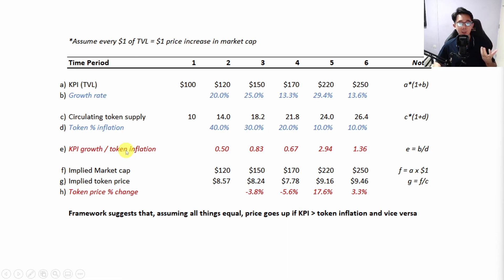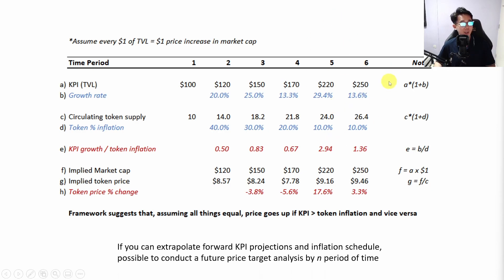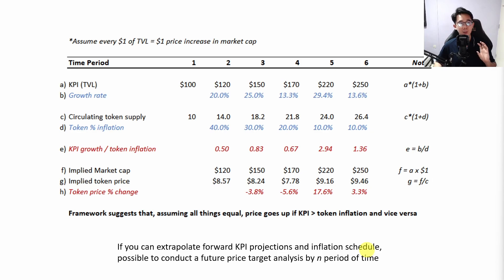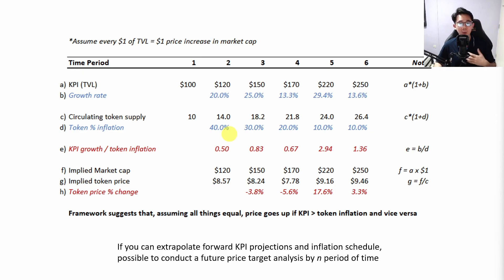In the sample use case shown, when the ratio is below one in months two, three, and four, the price drops; when it rises to 2.94 in month five, the price pumps by nearly 18%. To estimate a future price target, you can extrapolate forward KPI projections, growth rates, and forward inflation rates to a target month-end period. These assumptions and parameters can be tweaked and refined for more accurate results, and for those keen on building this model, you can also backtest it against other protocols.